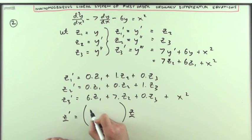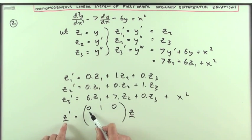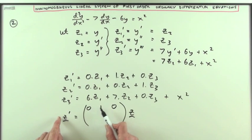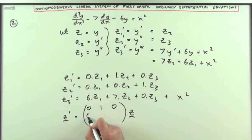So the matrix equation would be 0, 1, 0, because z1 dashed would be no lots of z1, 1 lot of z2, no lots of z3, and so on. 0, 0, 1, and 6, 7, 0, z,